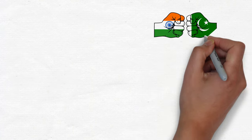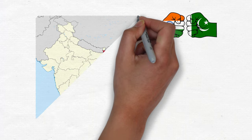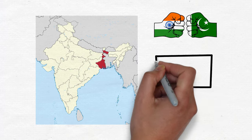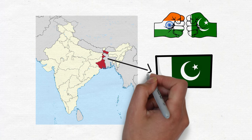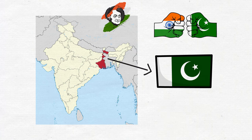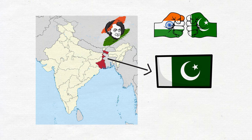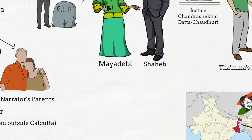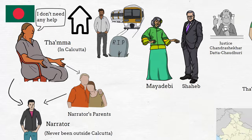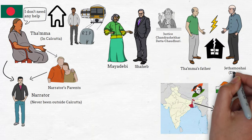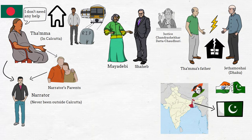When the partition happens in 1947, the East Bengal of India — today we know it as Bangladesh — is given to Pakistan, and this part of the country is known as East Pakistan. It was later Indira Gandhi who helped East Pakistan get freedom, but before that it was under Pakistan. So after partition, Thama was not able to go back to her city Dhaka. But her uncle Jetmo Shai still lives there in Dhaka.